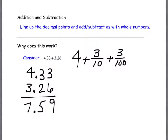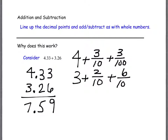You can think about that 3 tenths as 3 dimes, and that 3 one-hundredths as 3 pennies — that's another helpful relationship. We can do the same with 3.26: we have the 3, then 2 tenths, and 6 one-hundredths. There are portions of this that can be added together very easily because they already share common denominators.